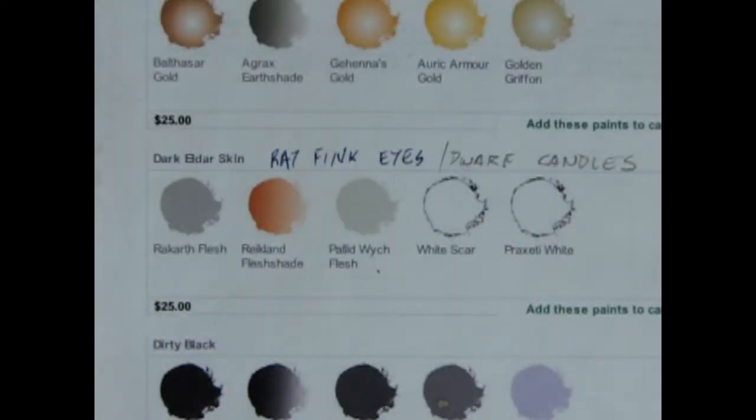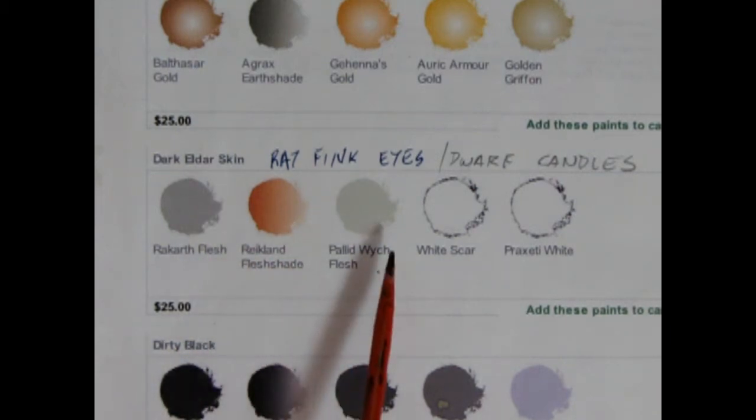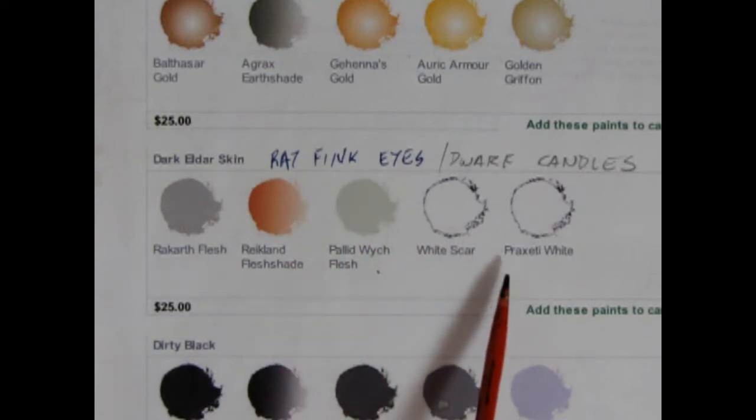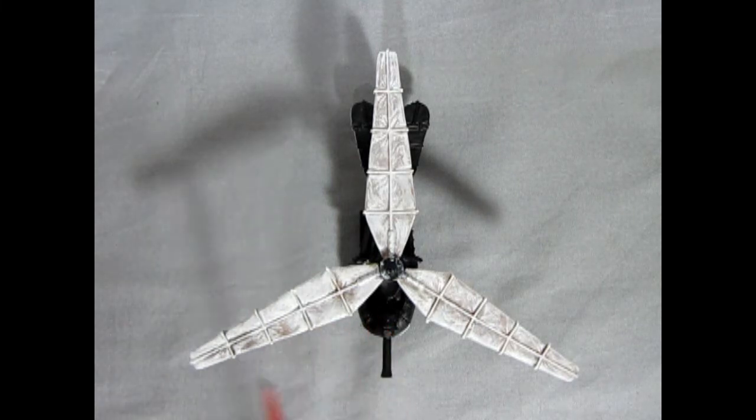I do believe I used this combination a long time ago, which is Raycarth Flesh as a base color, Reikland Flesh Shade as a shade color, Pallad Witch Flesh as layer one, followed by White Scar, and maybe some Praxeti White. Here's our gyrocopter after applying the paint.